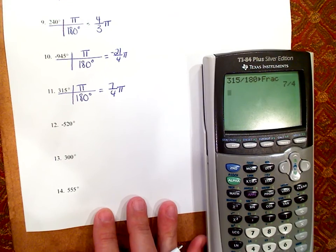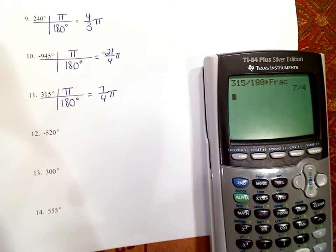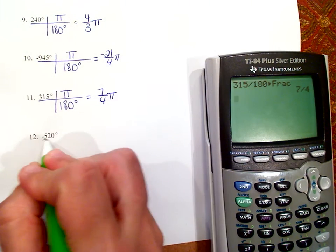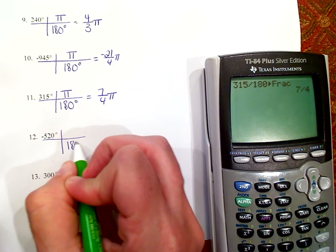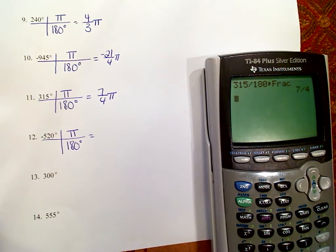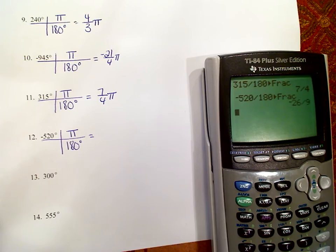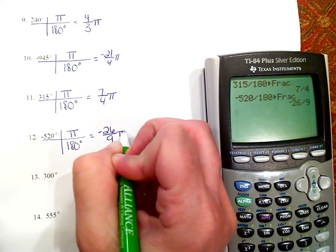Number 12 — negative 520 degrees. I start with degrees, so I need degrees on the bottom and pi radians on top. Negative 520 divided by 180, math, enter, enter — is negative 26 over 9 pi.